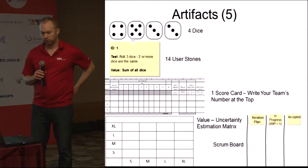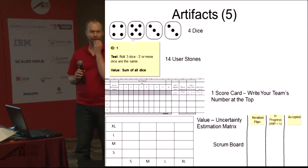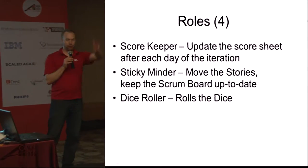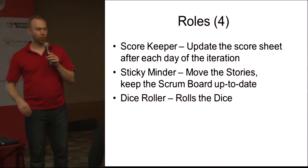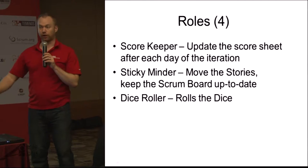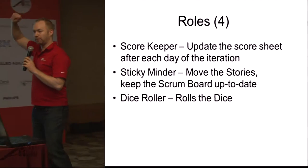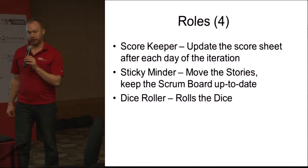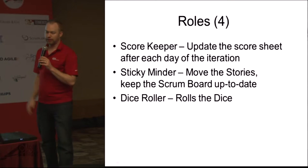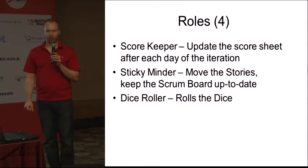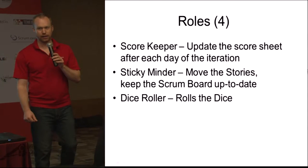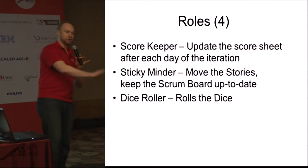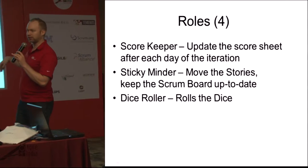There is also a scrum board to the right-hand side of your matrix, with columns for iteration plan, in progress, and accepted. You can move that if you wish. There are three roles in the game: the scorekeeper takes the scorecard and keeps it up to date; the sticky minder moves the stories and keeps the scrum board up to date; and the dice roller rolls the dice. You can shift roles around your cross-functional team as often as you like.